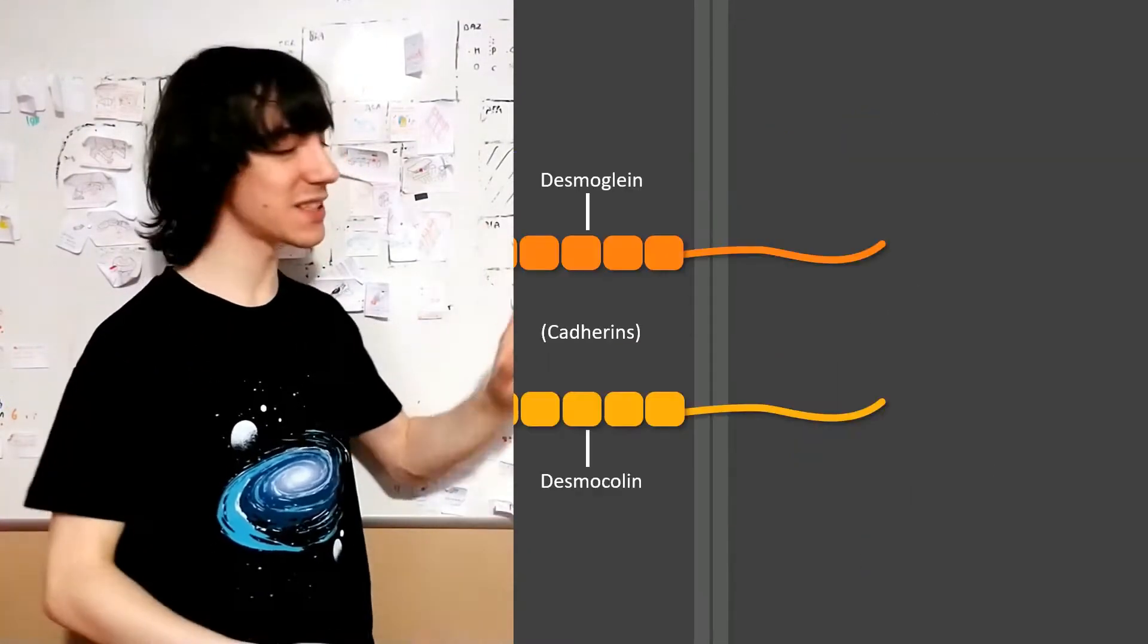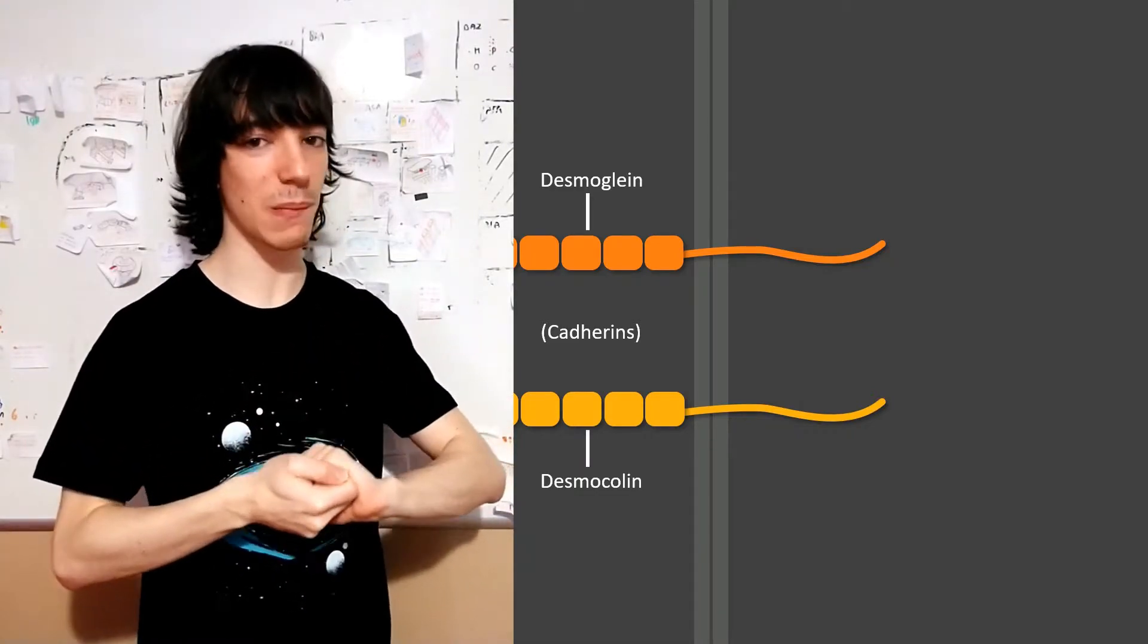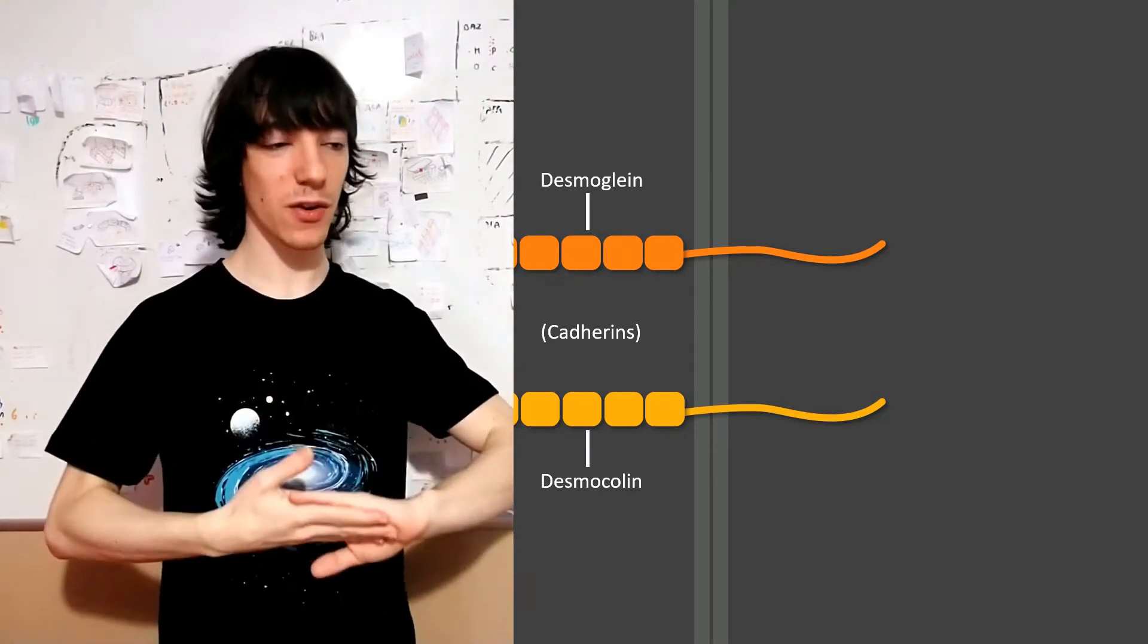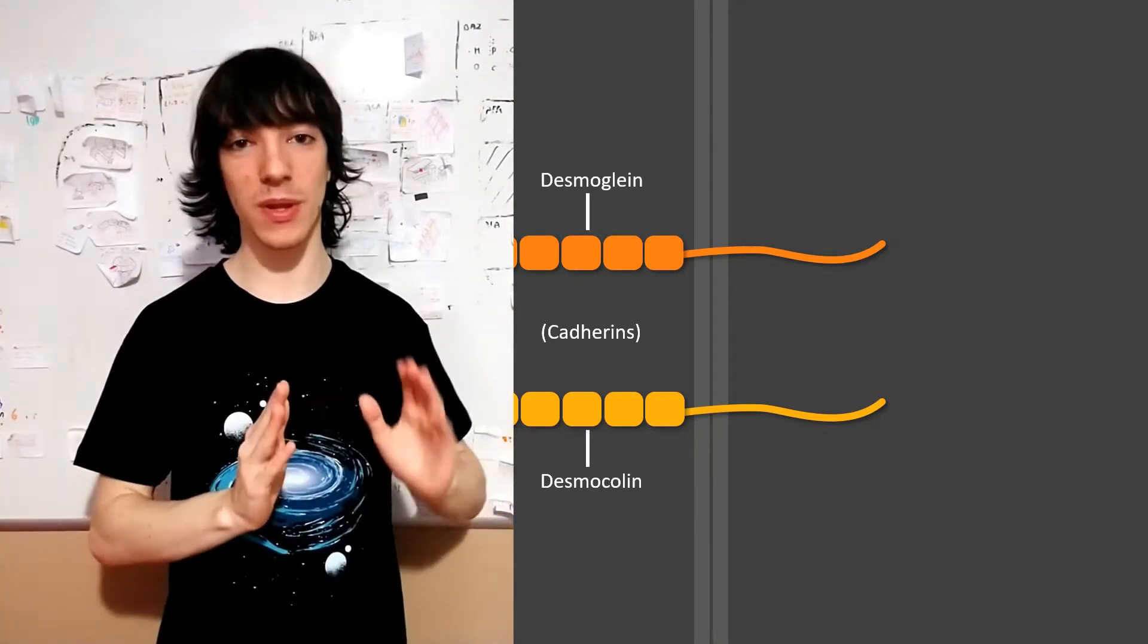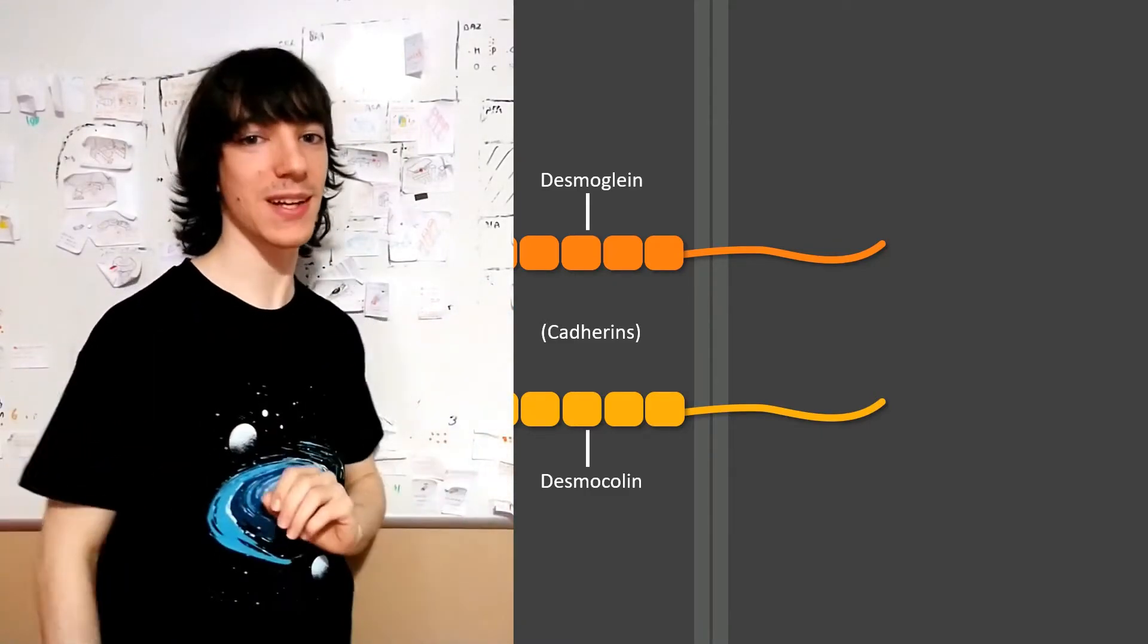Remember, cadherins grab other cadherins, they make homotypical bindings with them, with identical cadherins, and that is enough to bring cells close together. Not as close as with claudins or occludins, but it's enough to prevent them from separating.